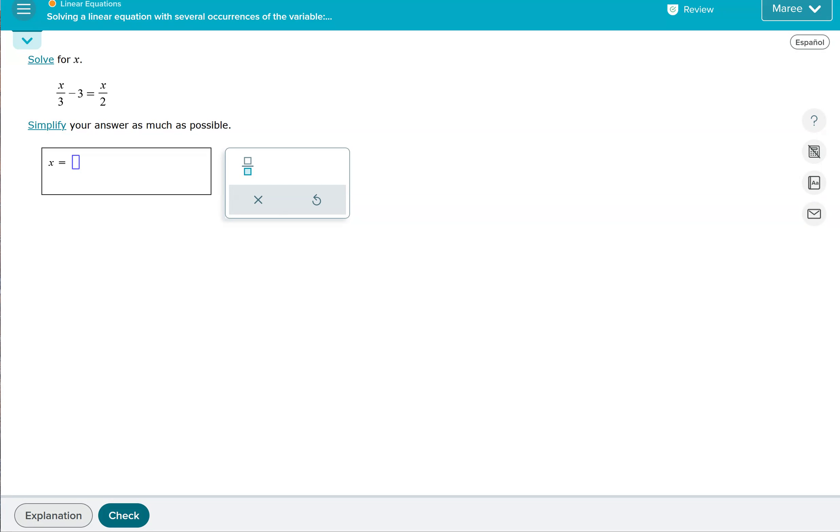Monomial numerator just means there's one term in the numerator of the fraction. Please subscribe to my channel and like any videos that are helpful to you.